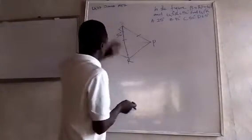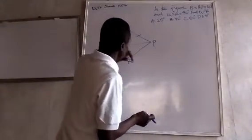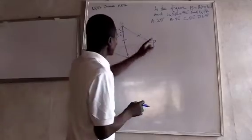Here is the figure. PS equals R equals QS and QSR is 50 degrees. Find QPR.